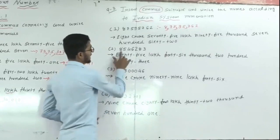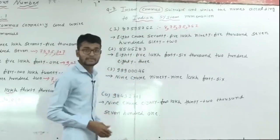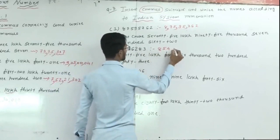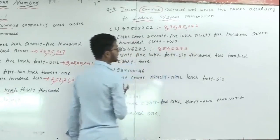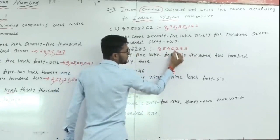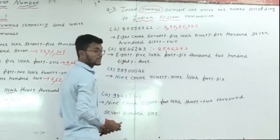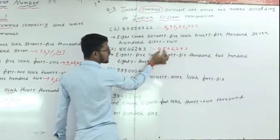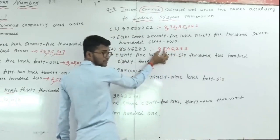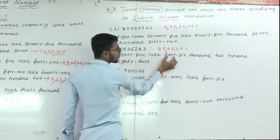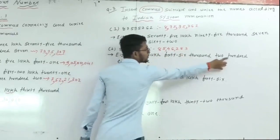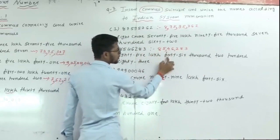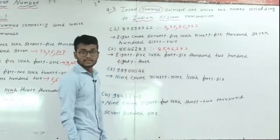Same for the second number: 85462283. Apply Indian system commas — first 3 digits, comma, then 2 digits, comma, then 2 digits. Place values: ones, tens, hundreds, thousands, ten thousands, lakh, ten lakh. Both ten lakh and lakh digits combined give 85 lakh. So this is: 85 lakh, forty-six thousand, two hundred and eighty-three.